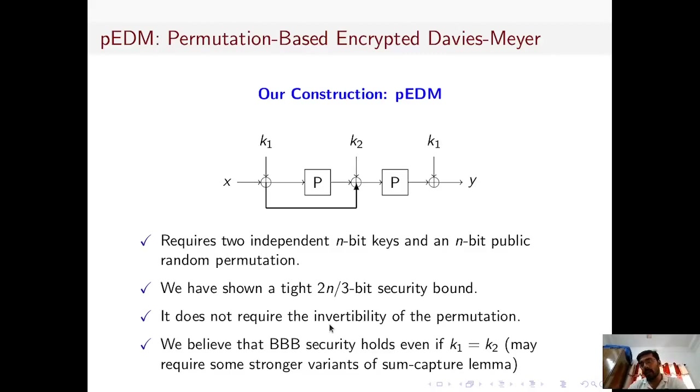It does not require the inverse of the permutation. We believe that if all the underlying round keys are made the same — that is, if K1 equals K2 — then this construction will also hold BBB security. But that may require some stronger variants of advanced sum-capture-type results.